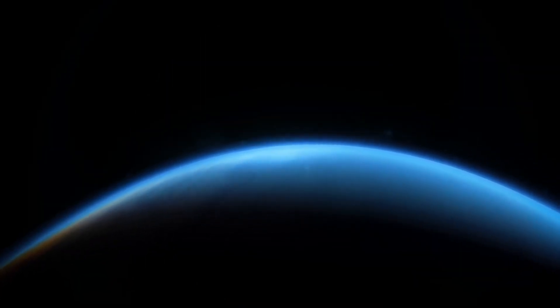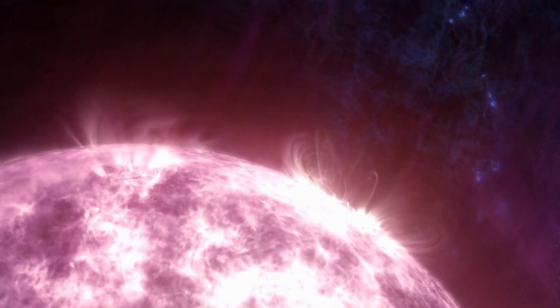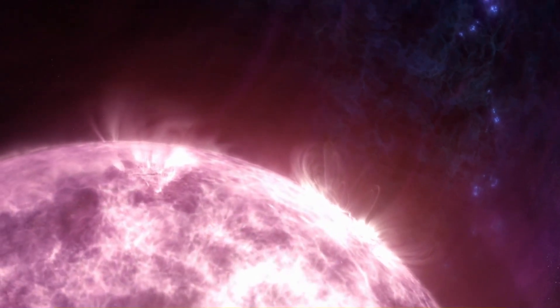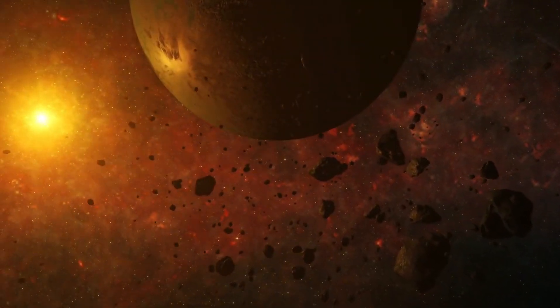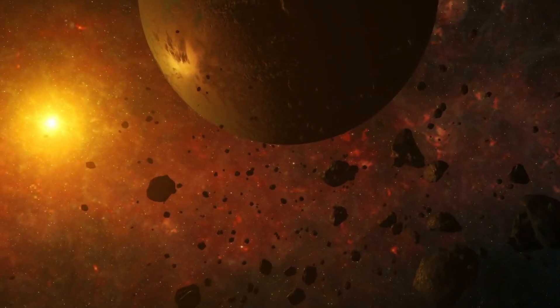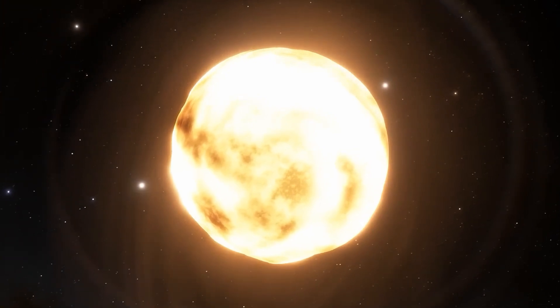These colossal entities, often measured in multiples of our sun's mass and radiance, eventually reach their cosmic twilight as their nuclear fuel in the core dwindles and exhausts. The process that follows is a sequence of events that transform the star in ways both spectacular and cataclysmic.